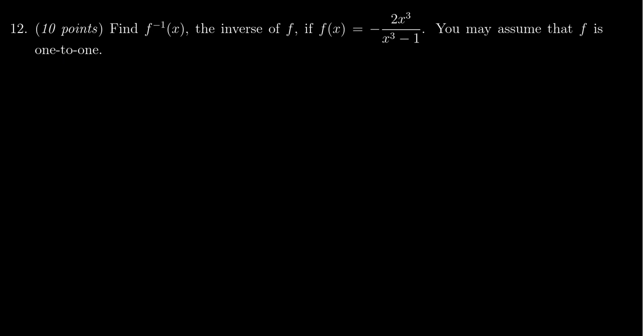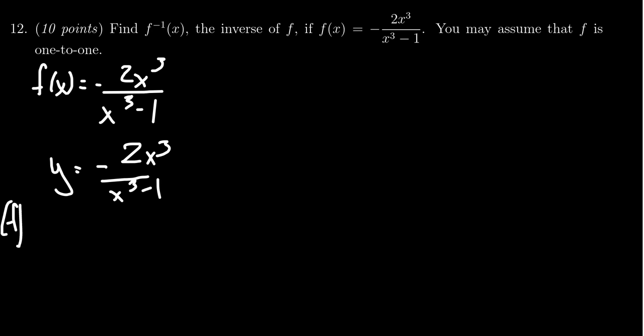So what we're going to do is start off with our function f of x. So f of x equals negative 2x cubed over x cubed minus 1. Now the inverse function has the relationship that it's going to reverse the roles of x and y. So it might be helpful instead to use the symbol y right now. So y equals negative 2x cubed over x cubed minus 1. This is a formula given for the function f.